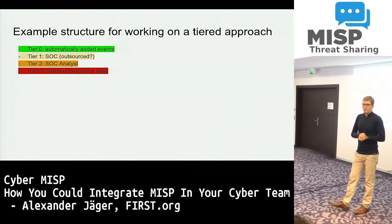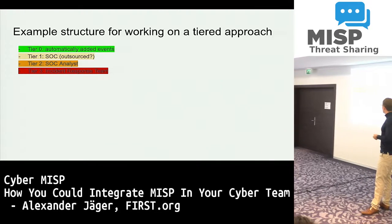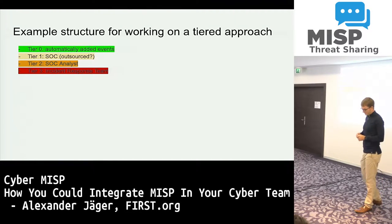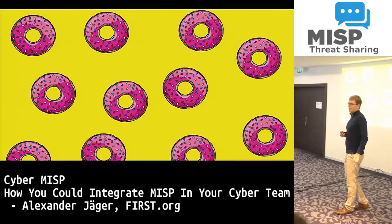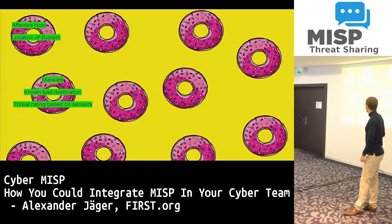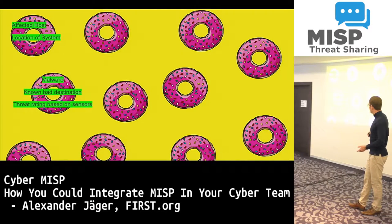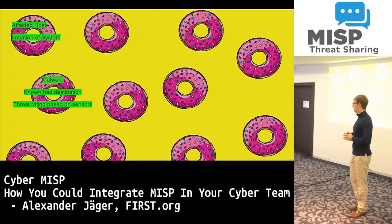How can we use MISP across your cyber defense organization? Assume you have tier zero automatic processing, an outsourced SOC for low-hanging fruits, internal SOC analysts, and an incident response team. At tier zero you can automatically add: which host is affected, the location of the system, the malware used, known bad destinations, and a threat rating based on sensors. If the malware name contains 'APT', you might want to increase the threat level. That already gives you a good basic set of information.